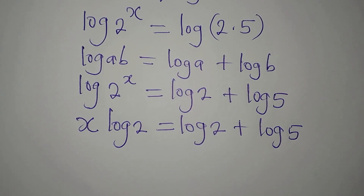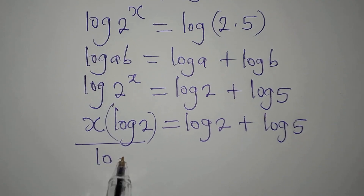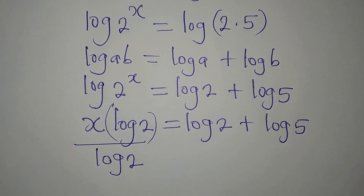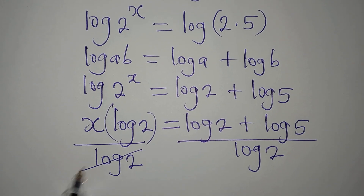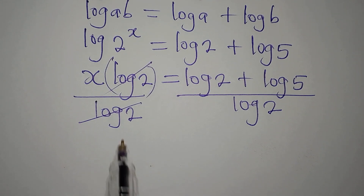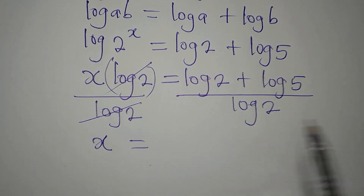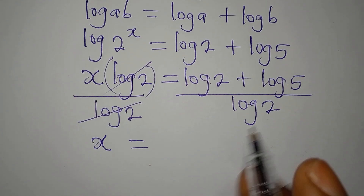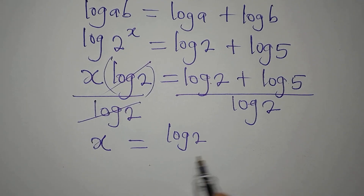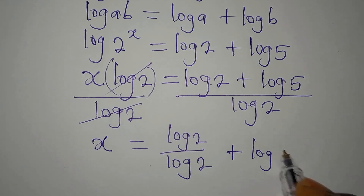We are looking for the value of x, so we need to remove the log2 by dividing both sides by log2. On the left we get x. On the right we have (log2 + log5) divided by log2, which we can split as log2/log2 plus log5/log2.